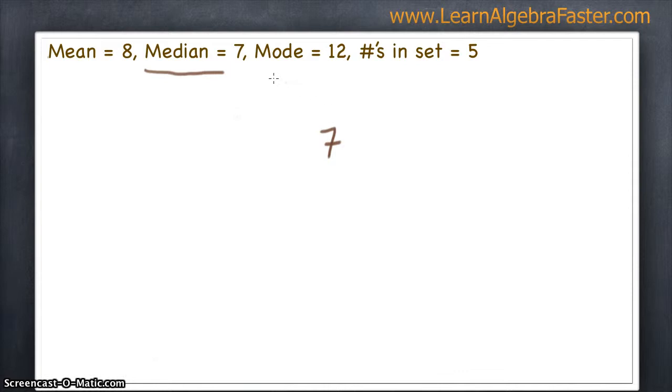Then we move on to the mode, and since the mode is bigger than the median, we put them over here to the right. Now, the mode has to show up most often, so I put it twice. And normally, I usually put it two or three or four times, just to make sure that whenever we're solving for other problems, we don't have two modes, or we change the mode, or anything like that.